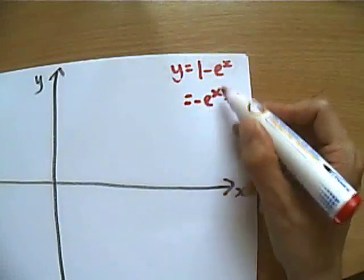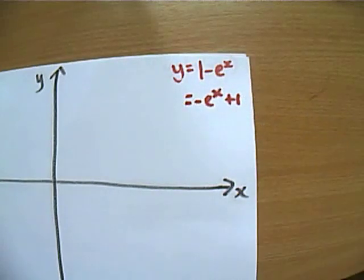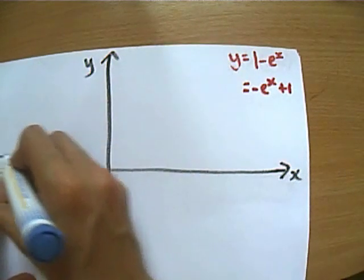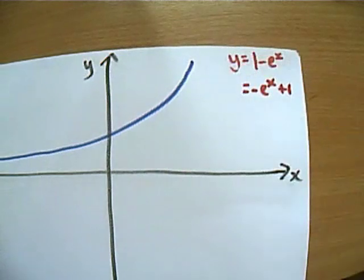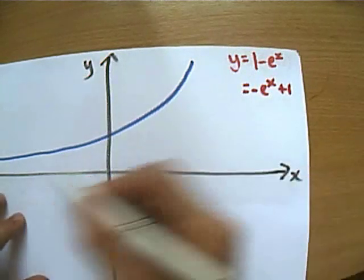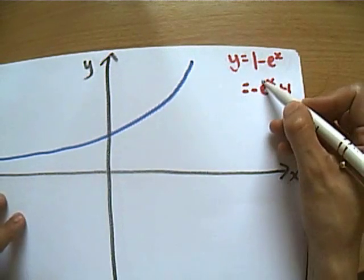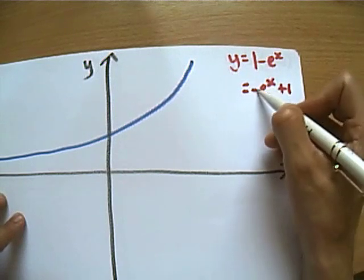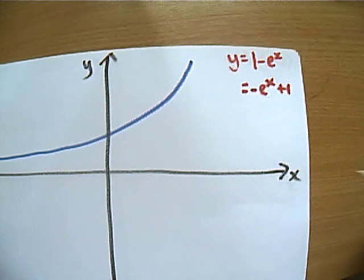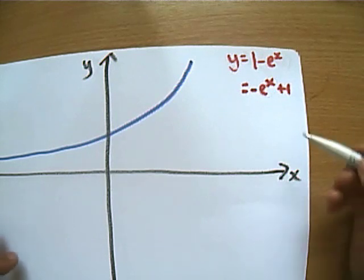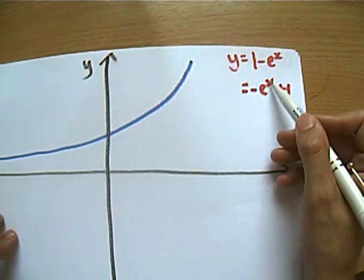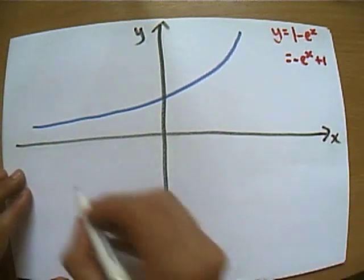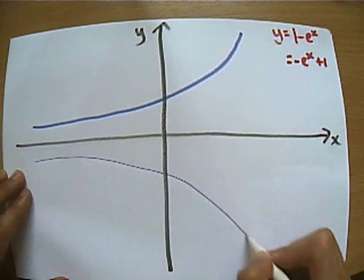Here is negative e to the x plus 1. Let's think about our basic e to the x graph and how we turn that into this graph. There's my e to the x, and what's the first thing I've done to that e to the x graph? I've made it negative. If it's positive I make it negative, if it's negative I make it positive. Basically, all the y coordinates of this original graph are now going to get switched to be their negative.